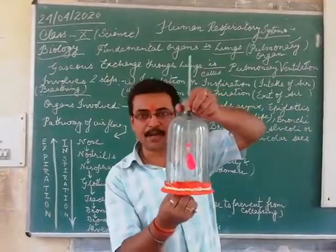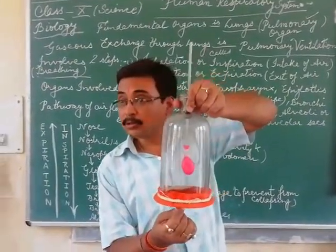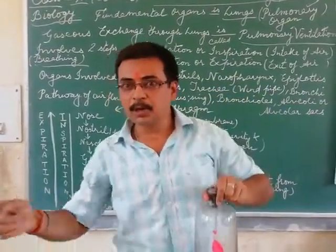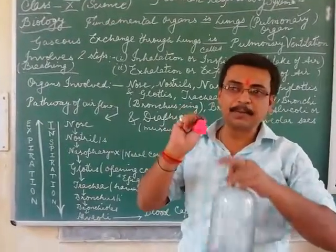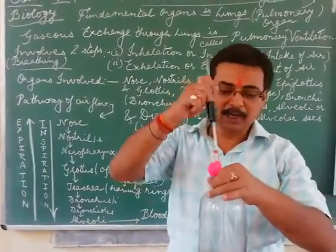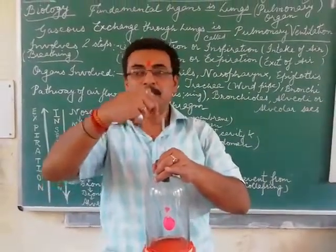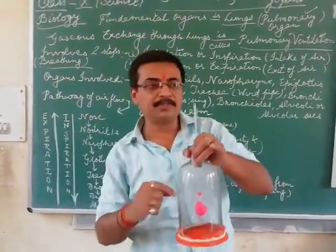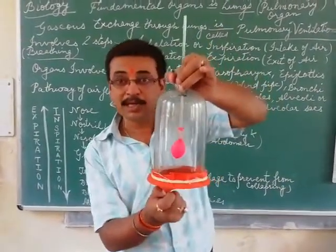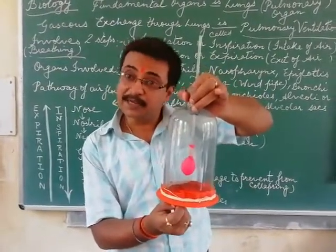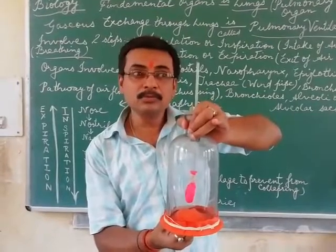Watch the balloon. As the diaphragm goes down, the balloon expands — because air has moved into the balloon. This balloon represents one of your alveoli. So through the trachea, then bronchus, bronchus finally moves into the alveoli. When your diaphragm goes down, you are starting inspiration. When the diaphragm goes up, that is expiration.